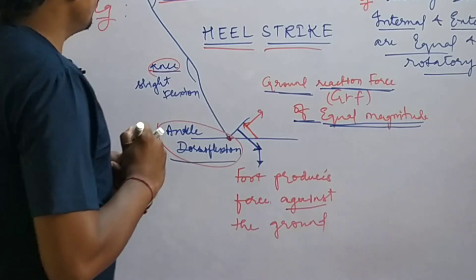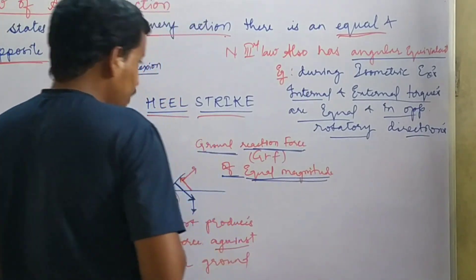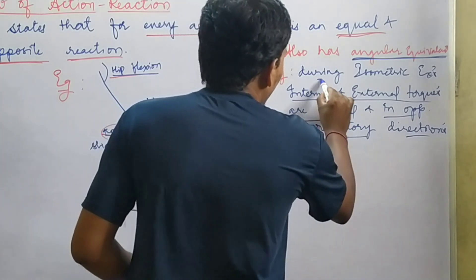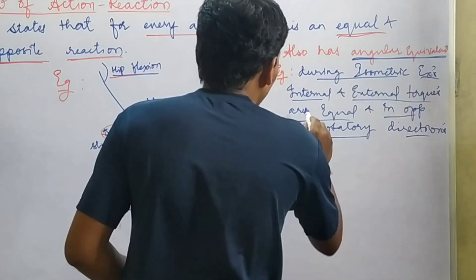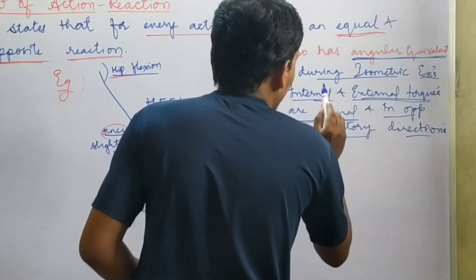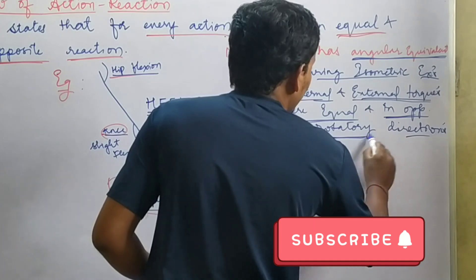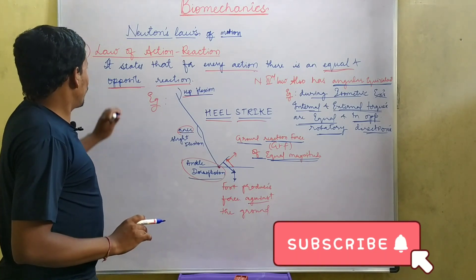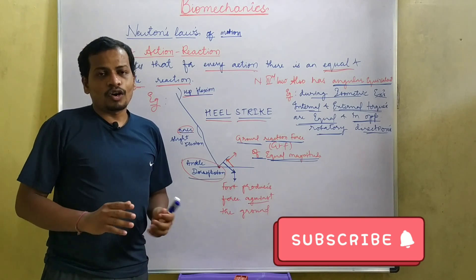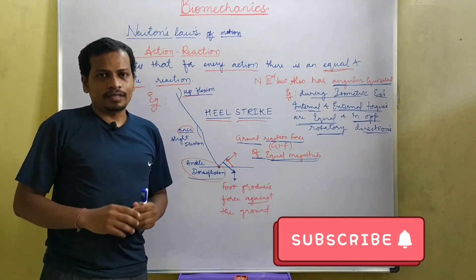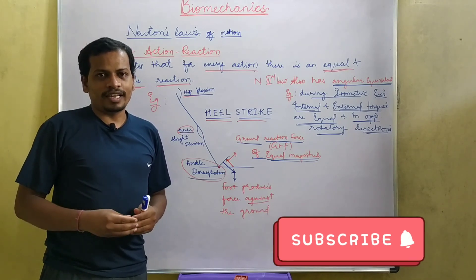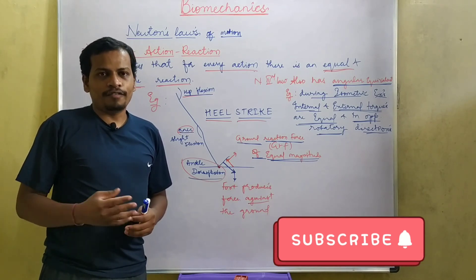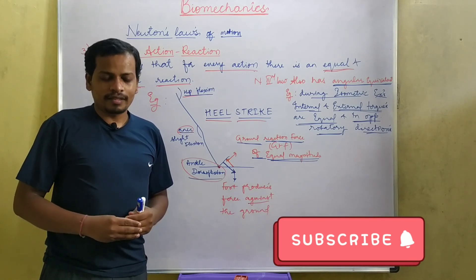Newton's third law also has an angular equivalent. For example, during a knee isometric exercise, internal and external torques are equal and in opposite rotatory directions. This is all about the three laws of Newton's law of motion: the law of inertia, the law of acceleration, and the law of action-reaction. If you like this video, please subscribe to my channel and share it with your friends. If you have any doubts, do comment in the comment section. Thanks for watching!